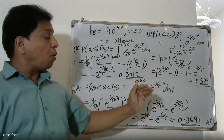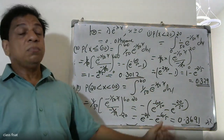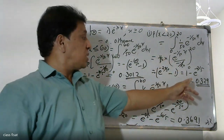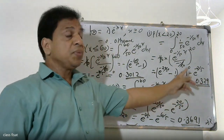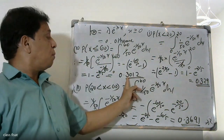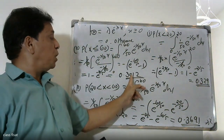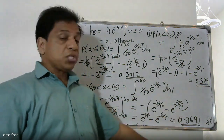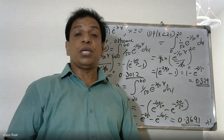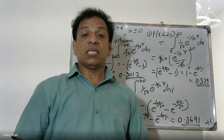Summary of all three questions: first question probability is 0.329, second question probability is 0.301, third question probability is 0.369.